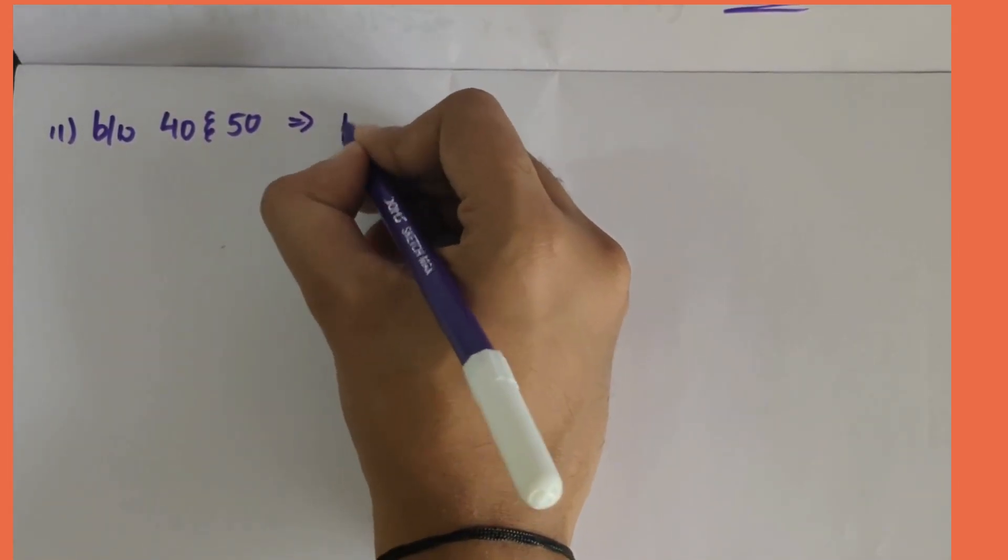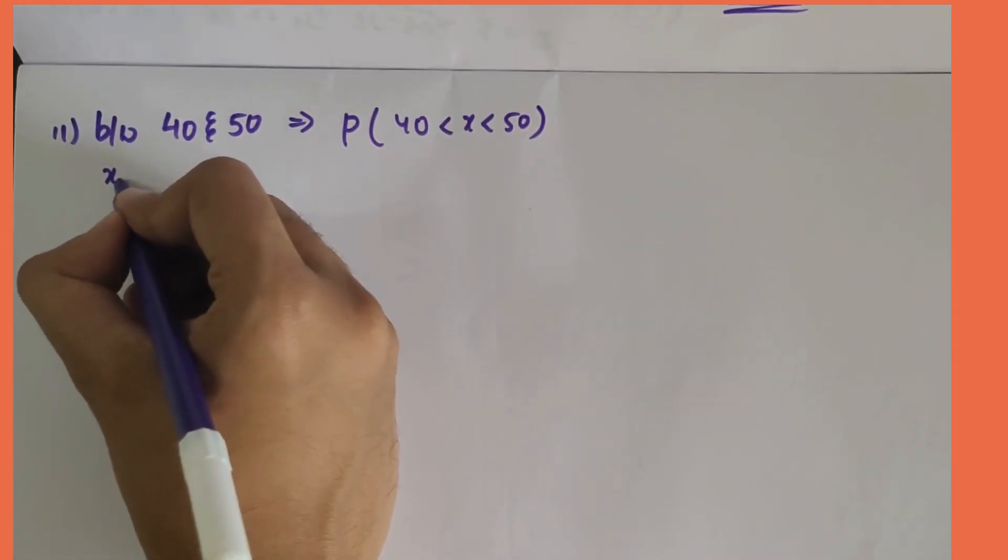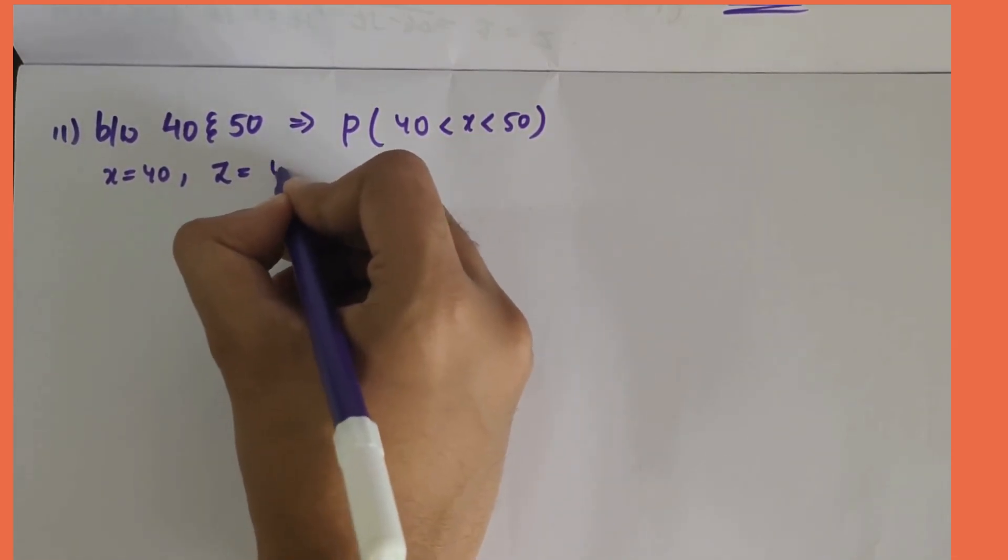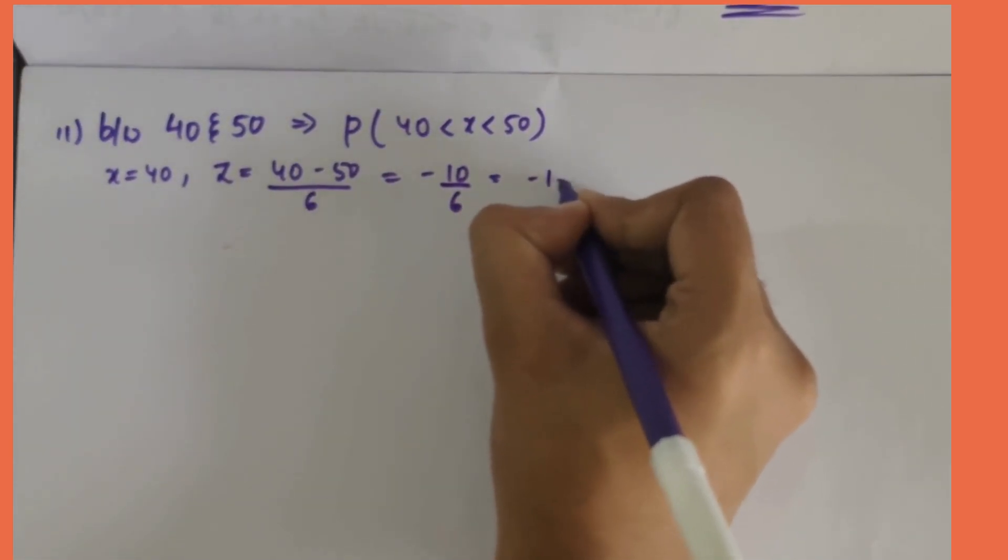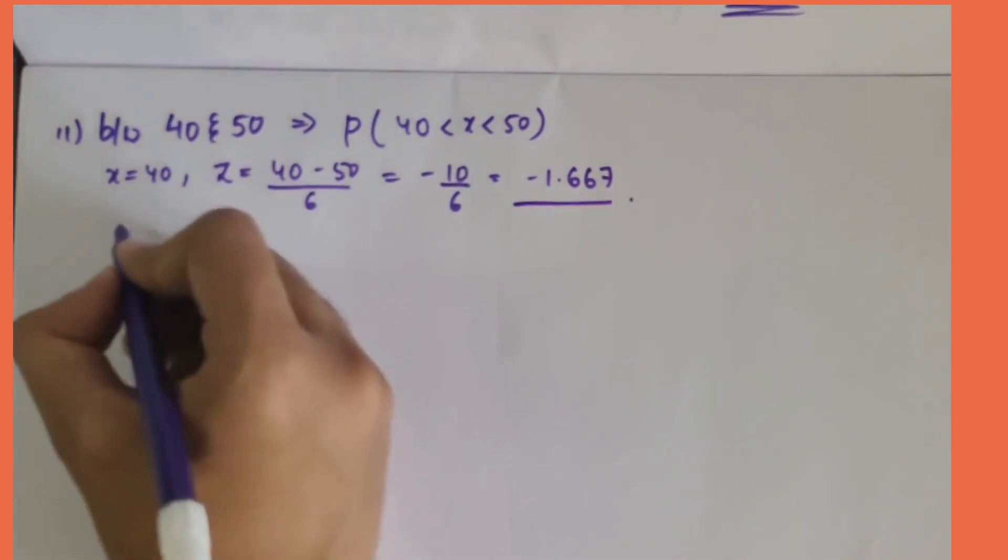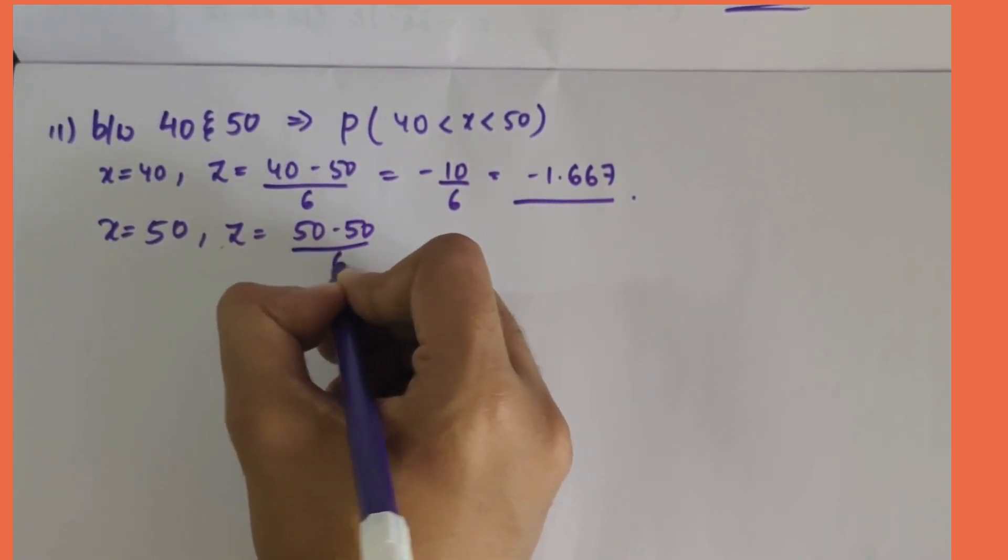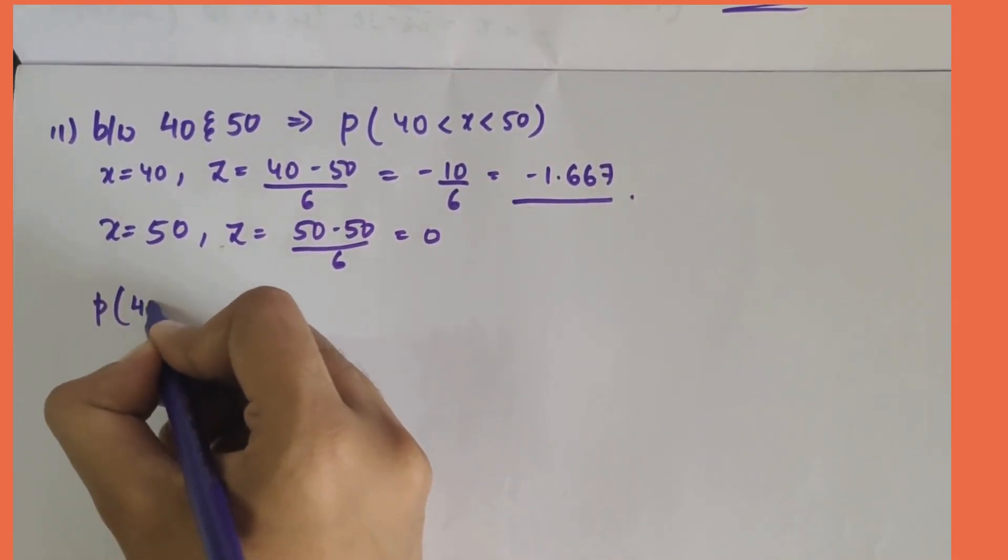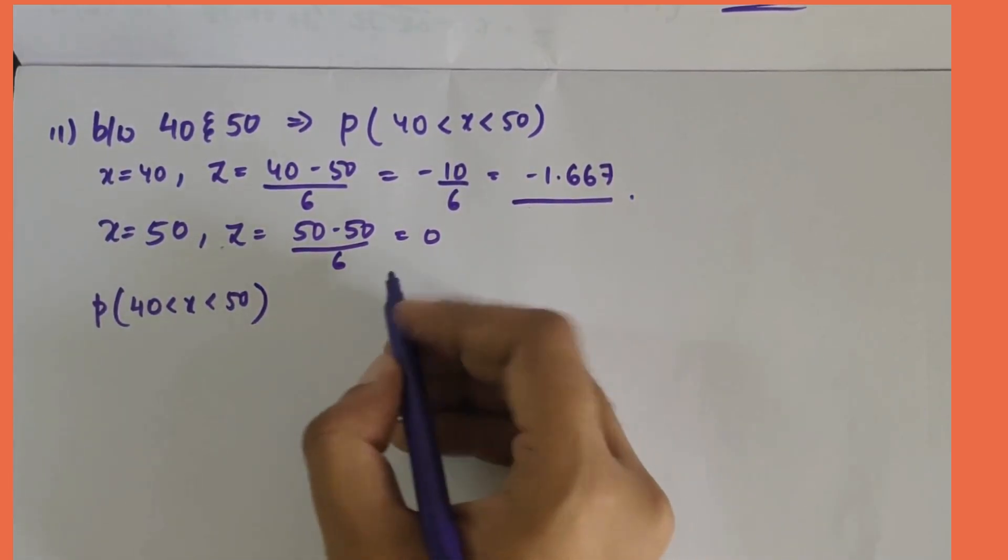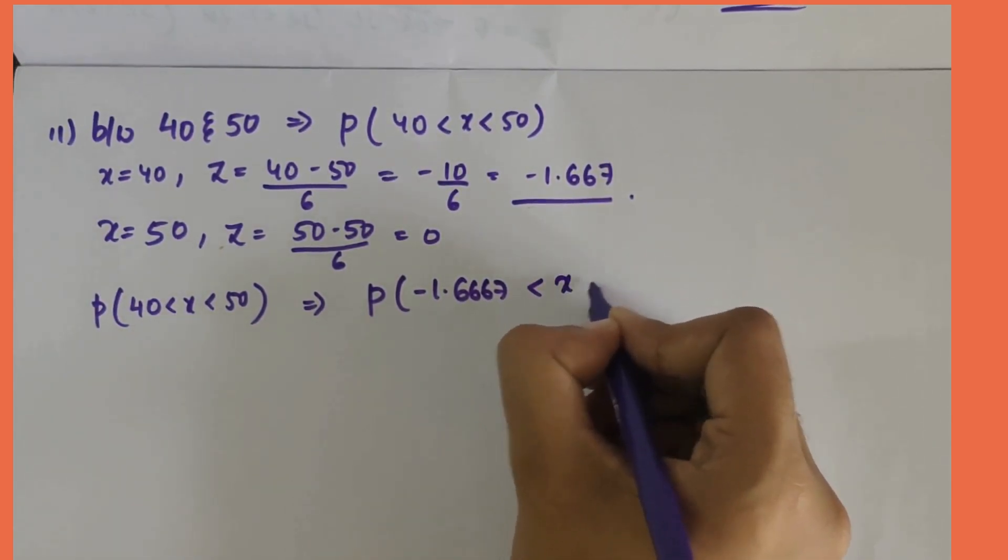The next sub question says between 40 to 50. We can write P as x changes from 40 to 50. First let's take when x is equal to 40, z value changes to be 40 minus 50 by 6, that is minus 10 by 6, that is minus 1.667. Now when x is equal to 50, z value becomes 50 minus 50 by 6, that is 0.